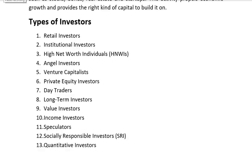Types of investors: investors may be classified into numerous categories primarily based on their investment desires, strategies, techniques, and degree of involvement. Here are some common sorts of investors. First is retail investors, also known as individual or small-scale buyers. Retail buyers are normally people who invest their private funds in monetary markets. They usually make investments through brokers and may use online platforms.